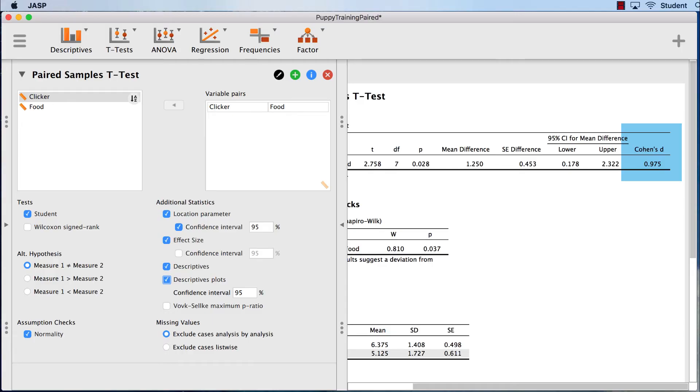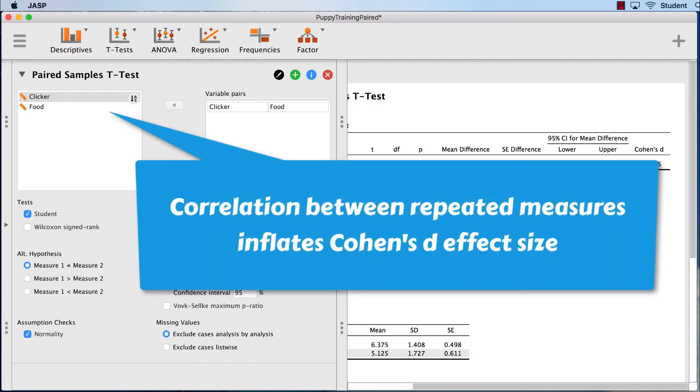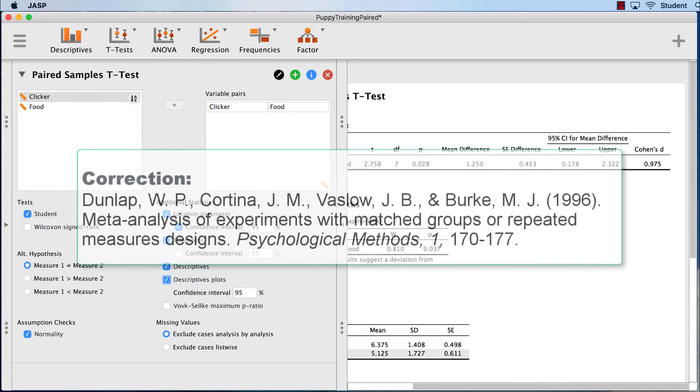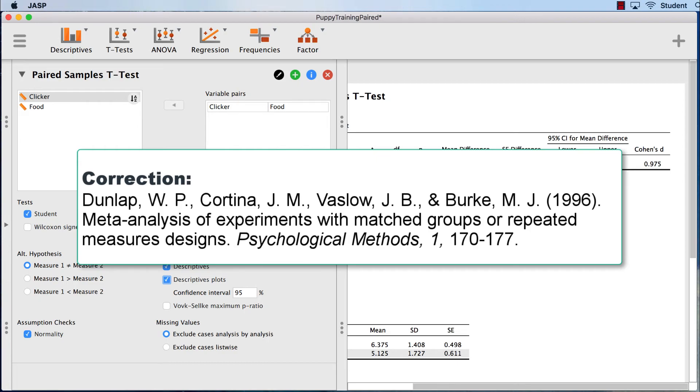This is a much larger effect size than the 0.80 we found with the independent samples t-test. One reason that this Cohen's D is larger is because these two variables, clicker and food, are correlated, and that intercorrelation between the variables is inflating the Cohen's D. There is a way to correct for this using a formula, but I will cover that in another video.